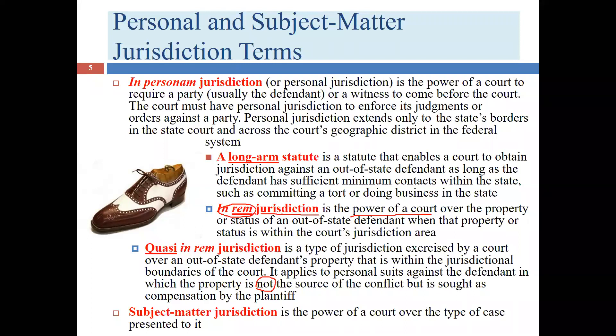In quasi in rem, Bob and Larry were in a car accident — Bob has no claim to the Monet, but he knows Larry owns it. Bob researches and discovers Larry owns a Monet worth $300,000 in Oklahoma. Bob sues based on quasi in rem jurisdiction, asserting that even though he doesn't own the Monet, if he wins the lawsuit and gets a $300,000 judgment, he'd like to use that painting to collect. In rem and quasi in rem are real but very rarely used — personal jurisdiction is overwhelmingly preferred.